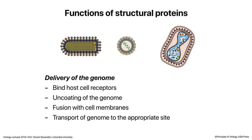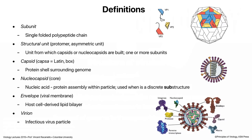Let's make some definitions to make sure you understand the terms I use. First is what I call a subunit. When I talk about a subunit of a virus particle, I mean a single folded polypeptide chain. Here on the right is a poliovirus, and here are the individual polypeptide chains — VP1, VP2, VP3. These are single polypeptides. That's what I mean by a subunit.